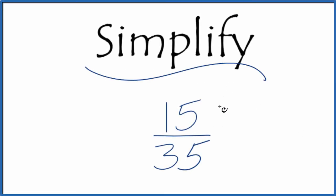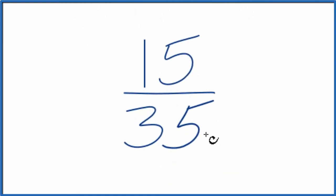Let's simplify the fraction 15 35ths. So what we're trying to do is we have this fraction here, 15 over 35, and we want to find a fraction that's equivalent, has the same value, but it's in simpler terms.